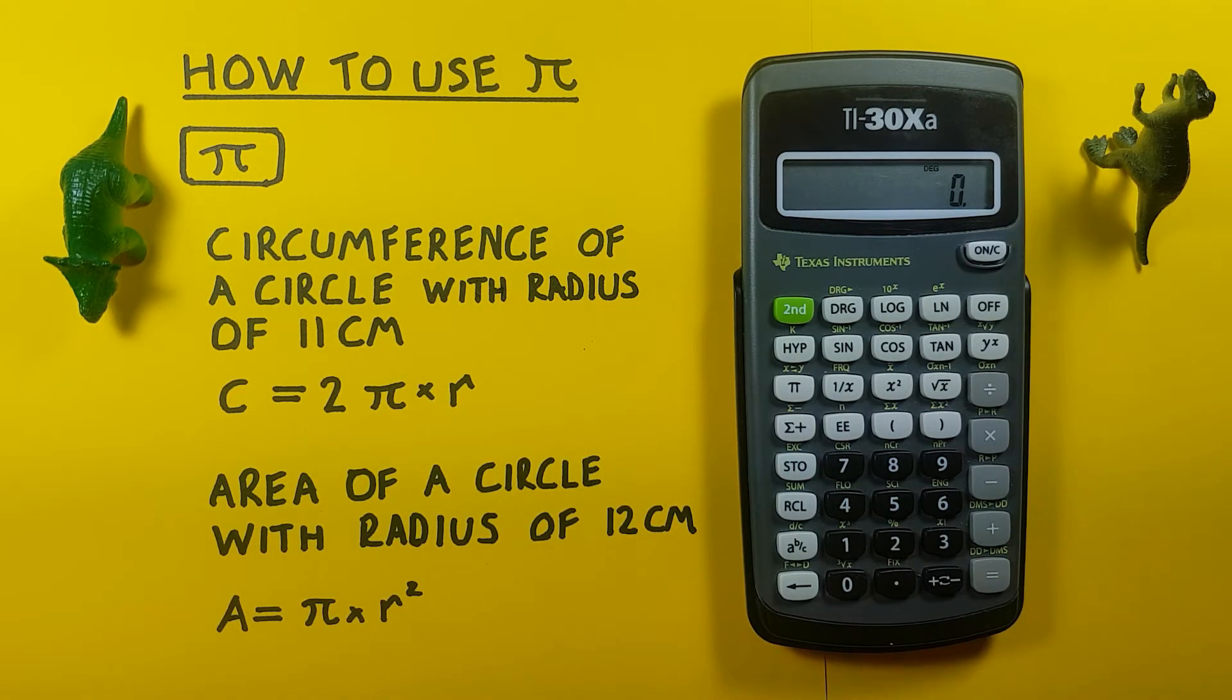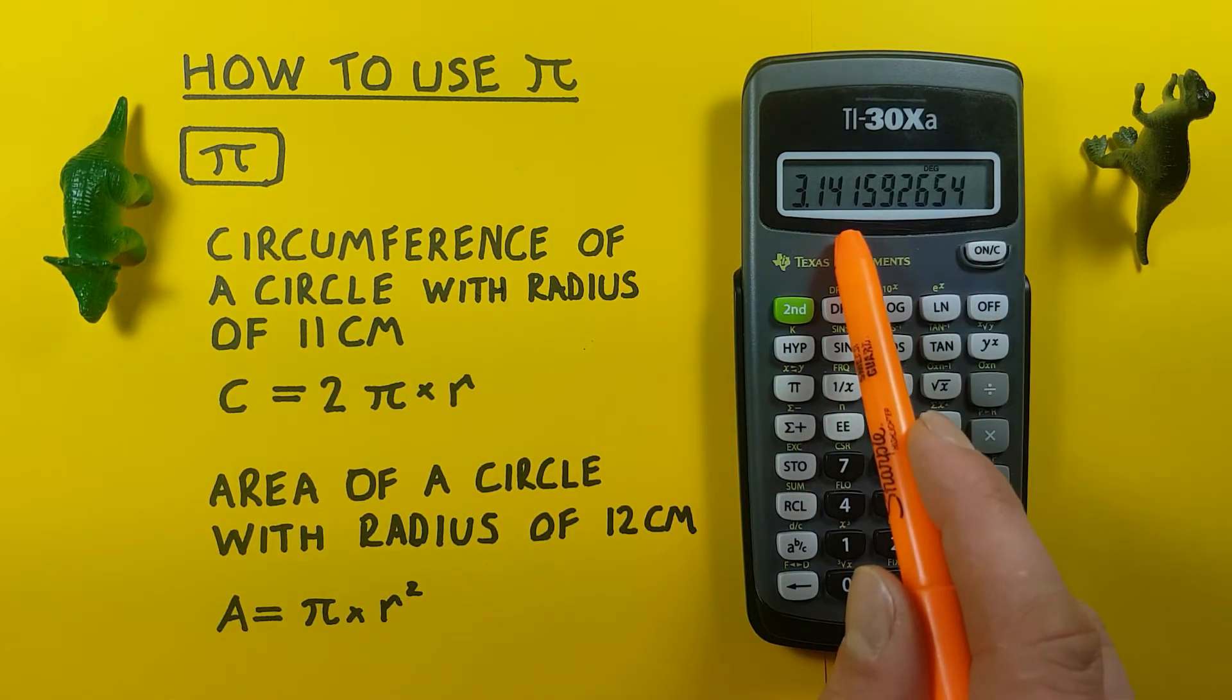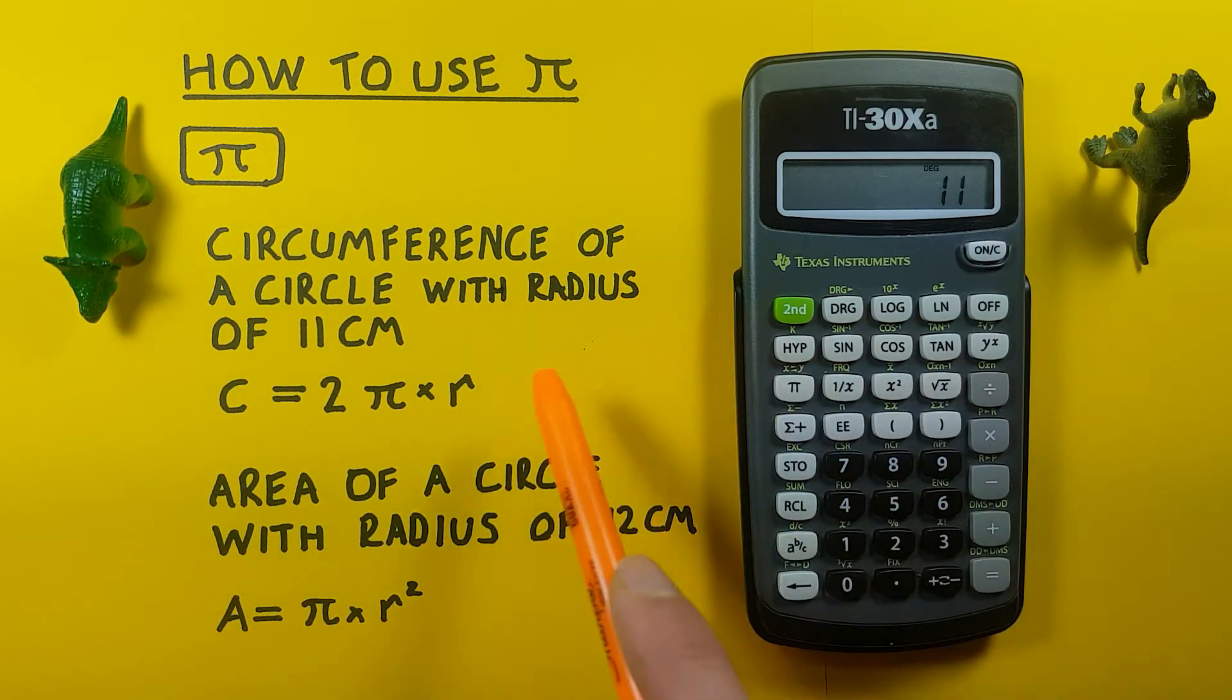So we can enter it like this: Press 2, times, then our PI key here. There you go. We see our PI on the screen, and then times 11, which was our radius.